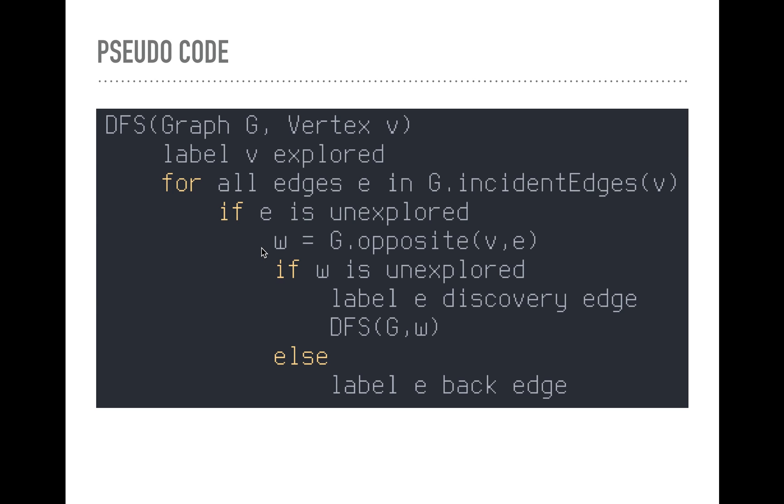W is going to be the other endpoint vertex. We'll call it W. And now, if W is unexplored, if that vertex connected through an edge to our start vertex, if that's unexplored, we'll label E a discovery edge, and then we will recurse using depth first search, provide it the graph, and now we'll use W, which is our new node.